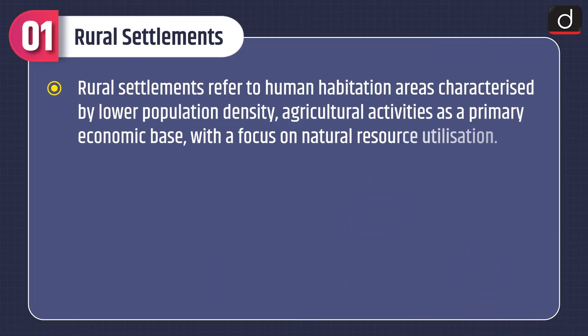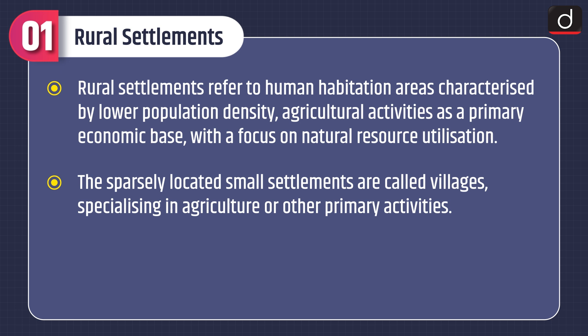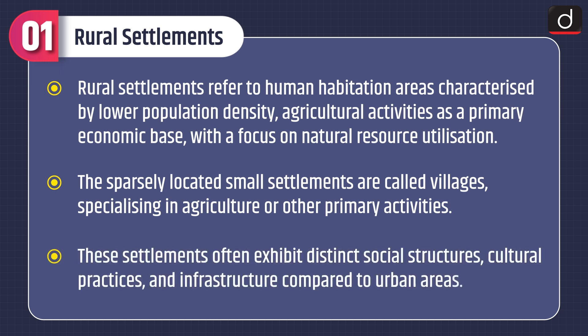Let's discuss about rural settlements. Rural settlements refer to human habitation areas characterized by lower population density, agricultural activities as a primary economic base, with a focus on natural resource utilization. The sparsely located small settlements are called villages, specializing in agriculture or other primary activities. These settlements often exhibit distinct social structures, cultural practices, and infrastructure compared to urban areas.